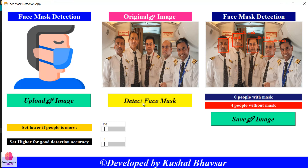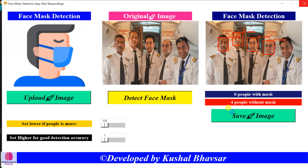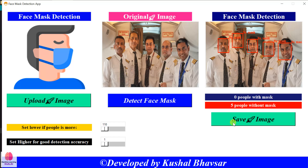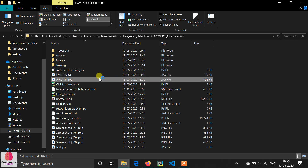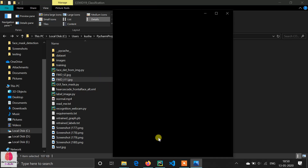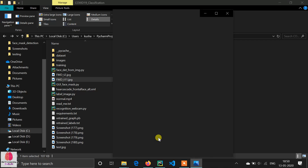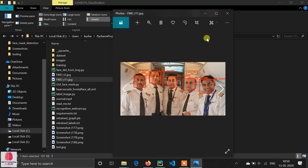Now you can see the person on the right is detected. I can save this image as well. If you have not watched the whole tutorial series on face mask detection, go and watch the whole series — this is an amazing project which is currently trending all over the world. You can see our image is saved.